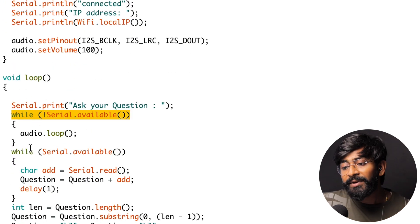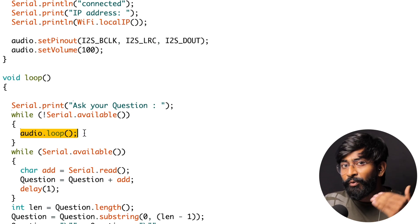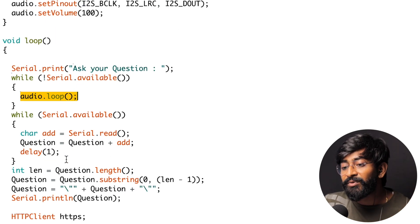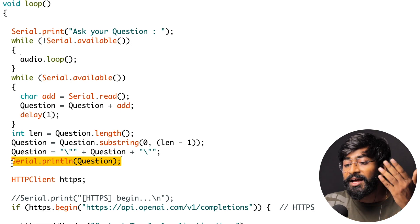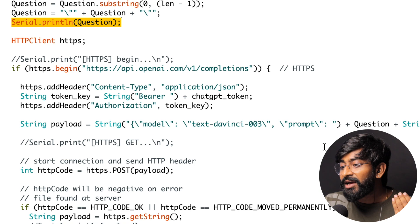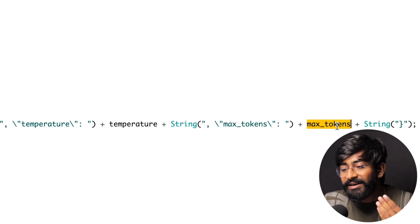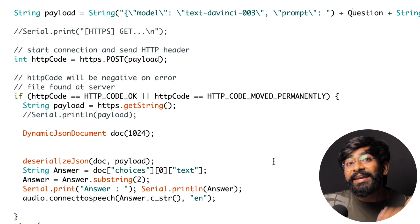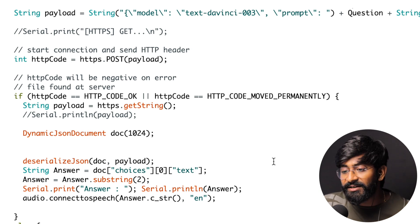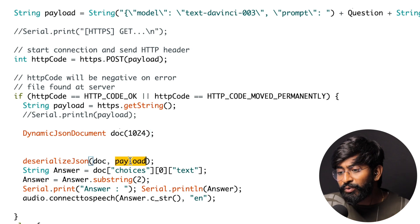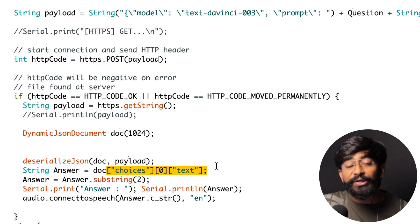The code uses 'while not serial.available' to keep running the audio loop. As soon as we provide a question, it moves ahead, stores the question into a string called 'askQuestion', and prints it in the serial monitor. It then makes an HTTP POST request with the question, temperature, and max tokens. The response from the ChatGPT server comes in JSON format, so we deserialize it using the ArduinoJSON library — creating a doc object and transforming the payload data into it.